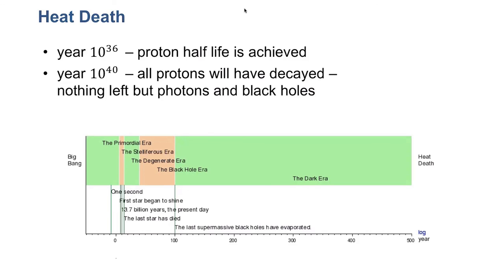It doesn't take very many of those doublings before all of the protons are gone. By about 10 to the 40, if the half-life is 10 to the 36, they're pretty much all gone. At that point, there's nothing. Stars are all gone. Anything that is made up of normal matter, planets are all gone. They've all decayed. There's nothing left but black holes and photons at that point. We've entered what is known as the black hole era.